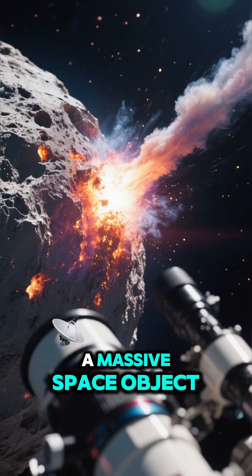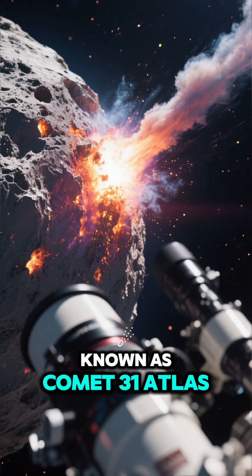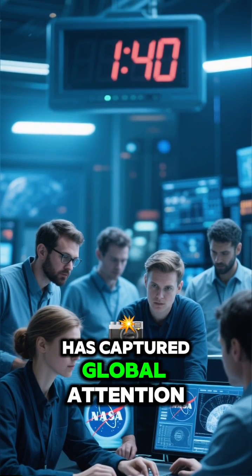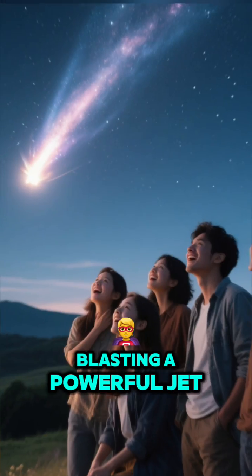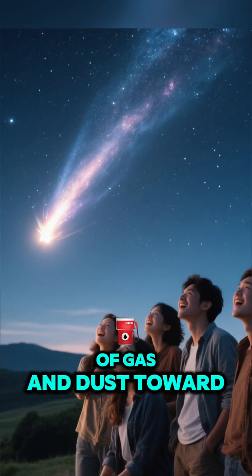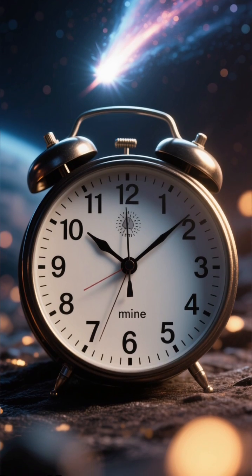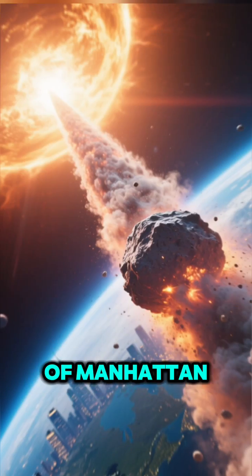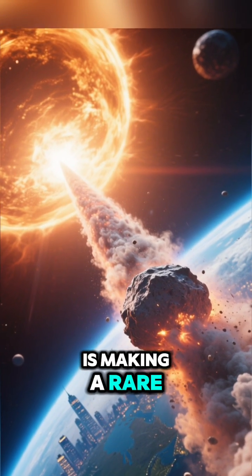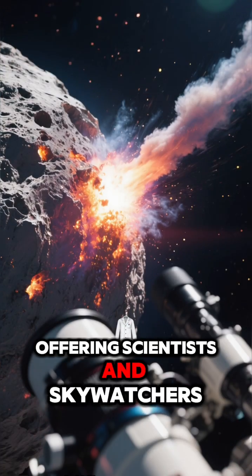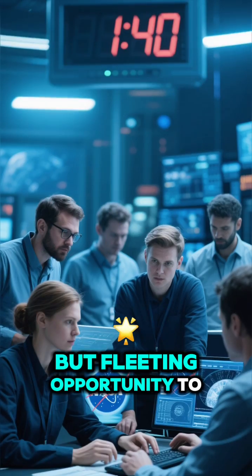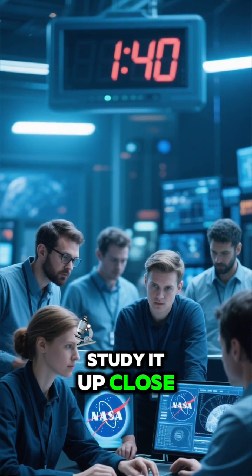A massive space object known as comet 31 Atlas has captured global attention after astronomers observed it blasting a powerful jet of gas and dust toward the Sun. This comet, roughly the size of Manhattan, is making a rare journey through the inner solar system, offering scientists and sky watchers a spectacular but fleeting opportunity to study it up close.